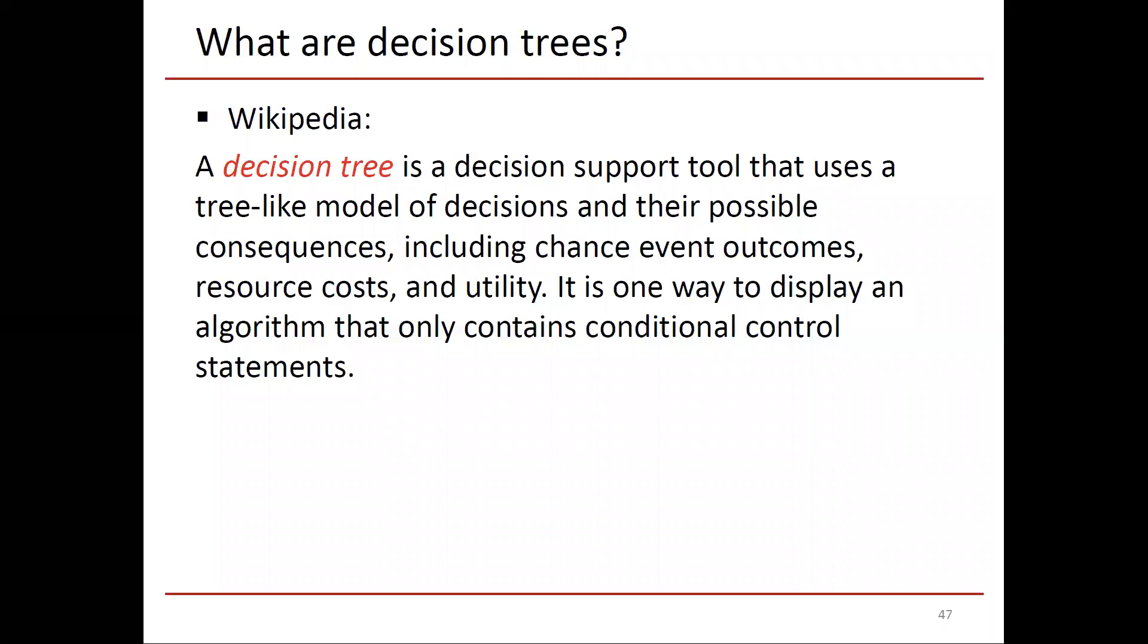So decision trees are defined by Wikipedia as follows. It's a decision support tool that uses a tree-like model of decisions and their possible consequences, including chance event outcomes, resource costs, and utility. It is one way to display an algorithm that only contains conditional control statements.